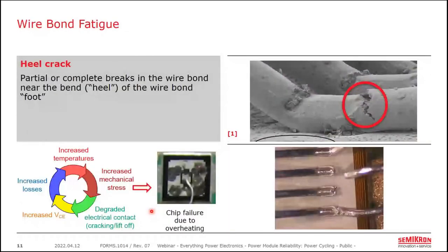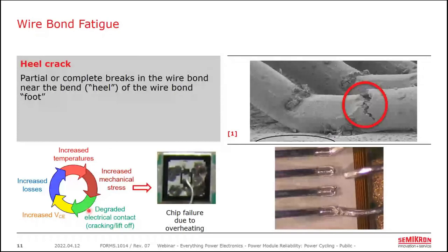Wire bond fatigue: as the bond wire and chip heat and cool, a common failure point is near the bend just before the bond wire is welded to the topside chip metallization — the heel. This mechanical fatigue starts as a crack, which increases electrical resistance, causes a higher voltage drop, causes additional losses, causes more heating, and increases stress — a cyclical process that accelerates until the bond wire breaks off entirely. Like all power cycle failure modes, the end result, if left unchecked, is thermal destruction of the chip, which can destroy evidence of the power cycling failure.